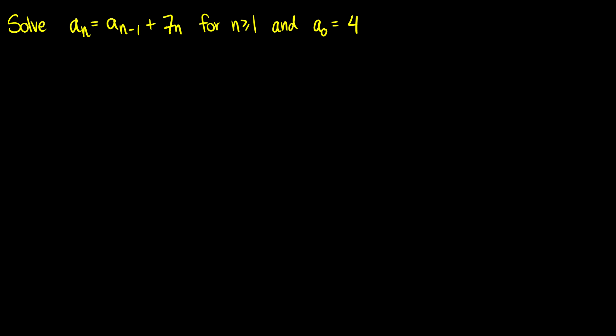So we want to solve an is equal to an minus 1 plus 7n. This is for n greater or equal to 1 and our initial condition a0 is equal to 4. So what I want to do is I want to bring all of our an's to one side. So here I have an minus an minus 1 is equal to 7n.